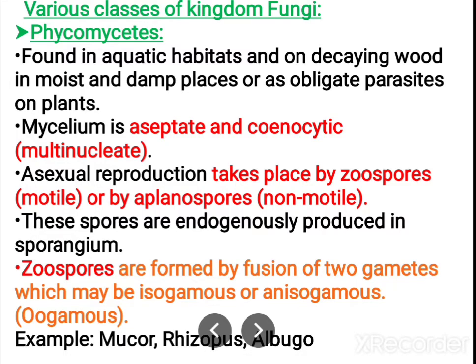Now let us study the various classes of kingdom fungi one by one. First is phycomycetes. Phycomycetes are found in aquatic habitats and can be upon decaying wood in moist or damp places. They also behave as parasites upon plants and animals. The mycelium is aseptate and coenocytic.